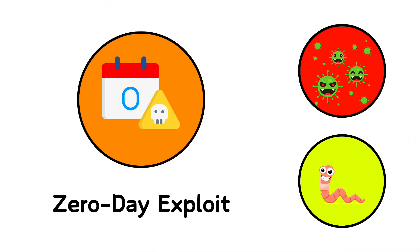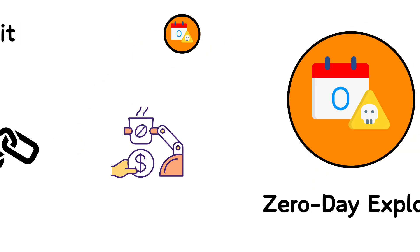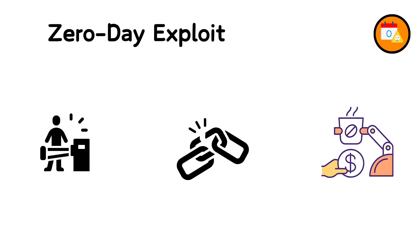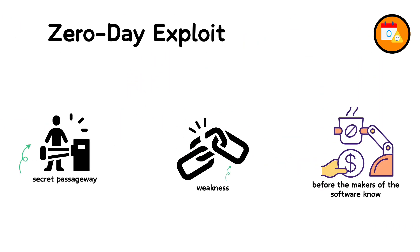20. Zero-Day Exploit. Imagine finding a secret passageway in a new building that the security hasn't discovered yet. A zero-day exploit is when hackers find and use a weakness in software before the makers of the software know about it or fix it. This lets hackers do harmful things while no one knows there is even a problem.